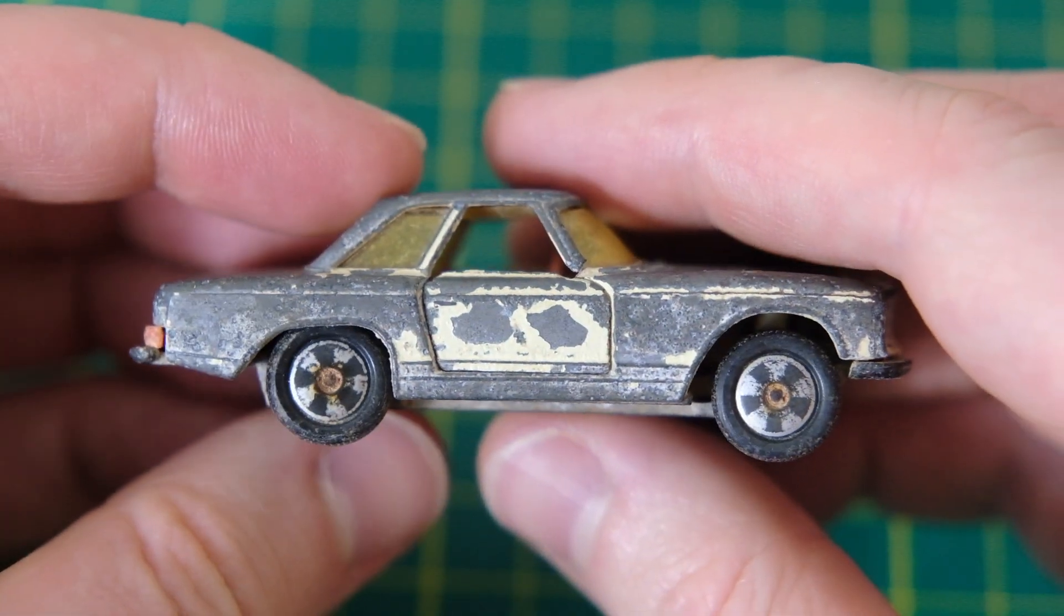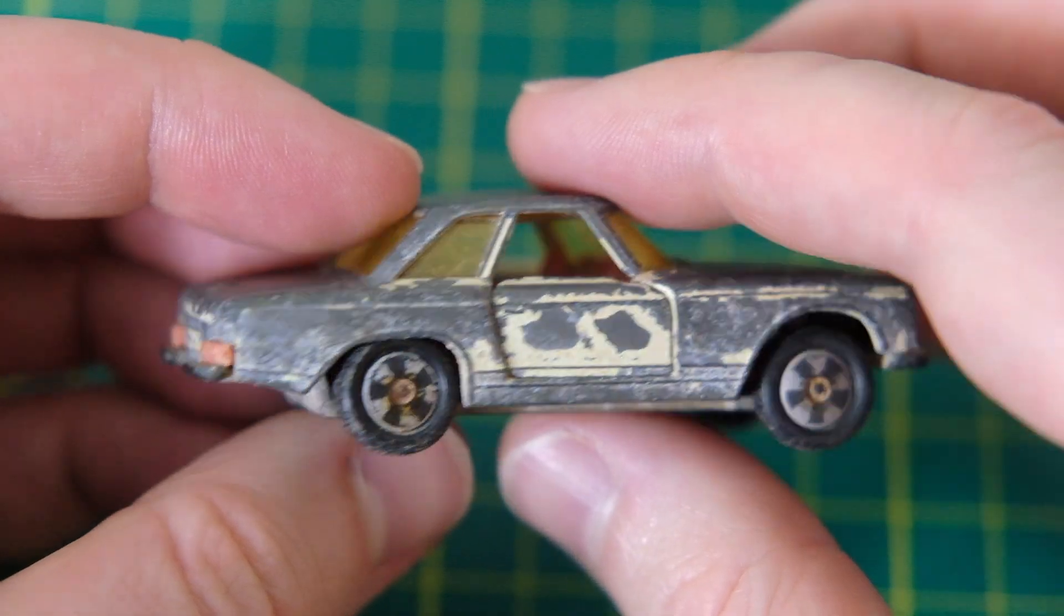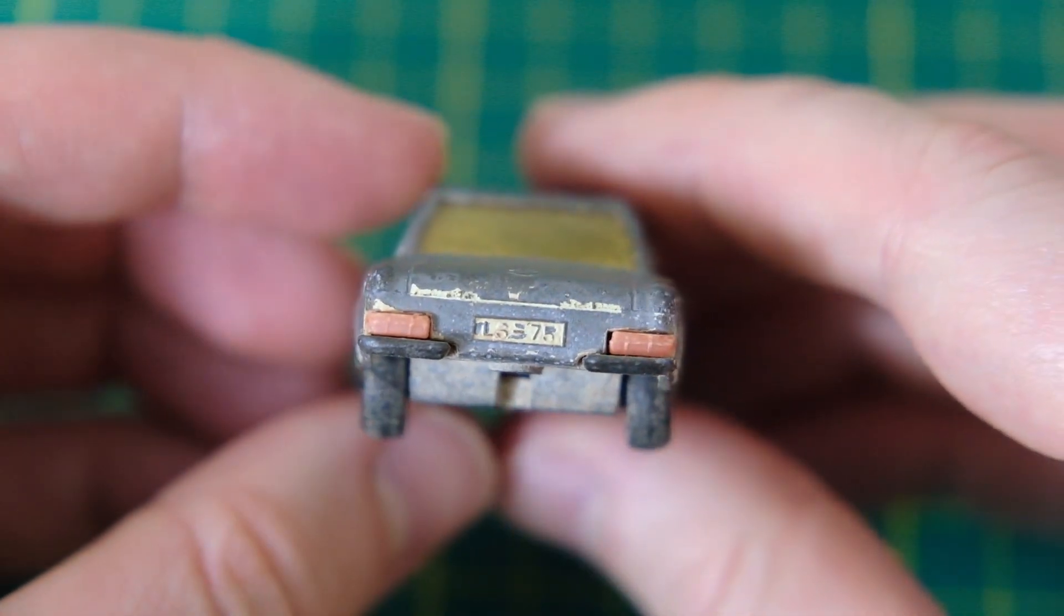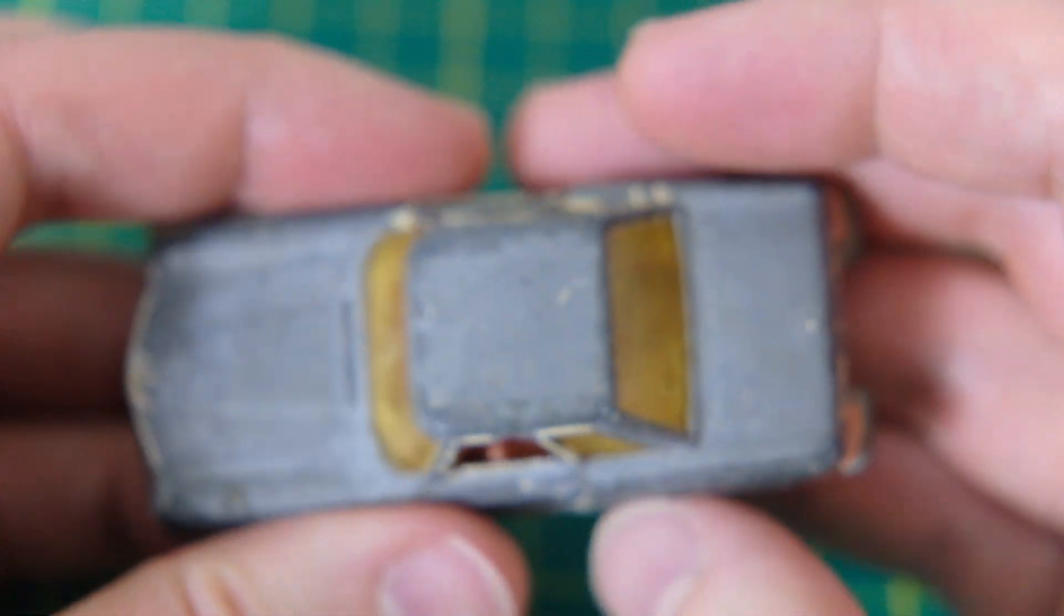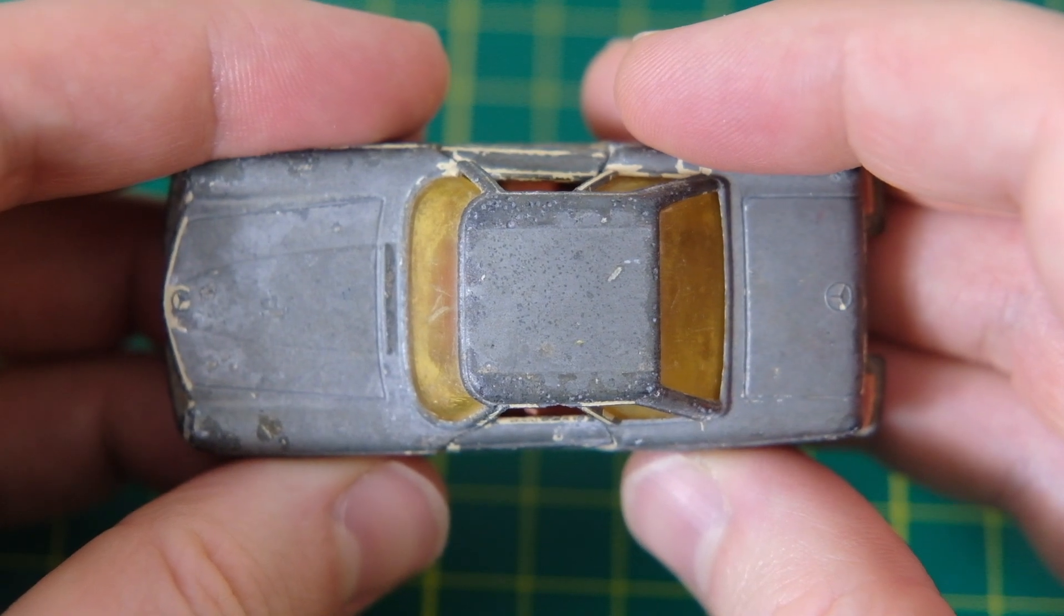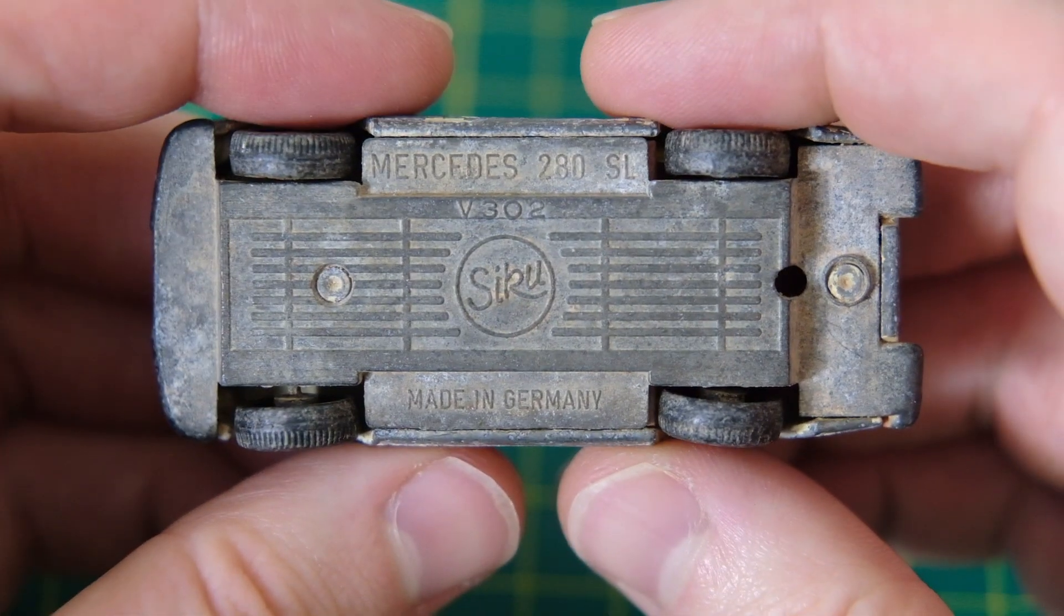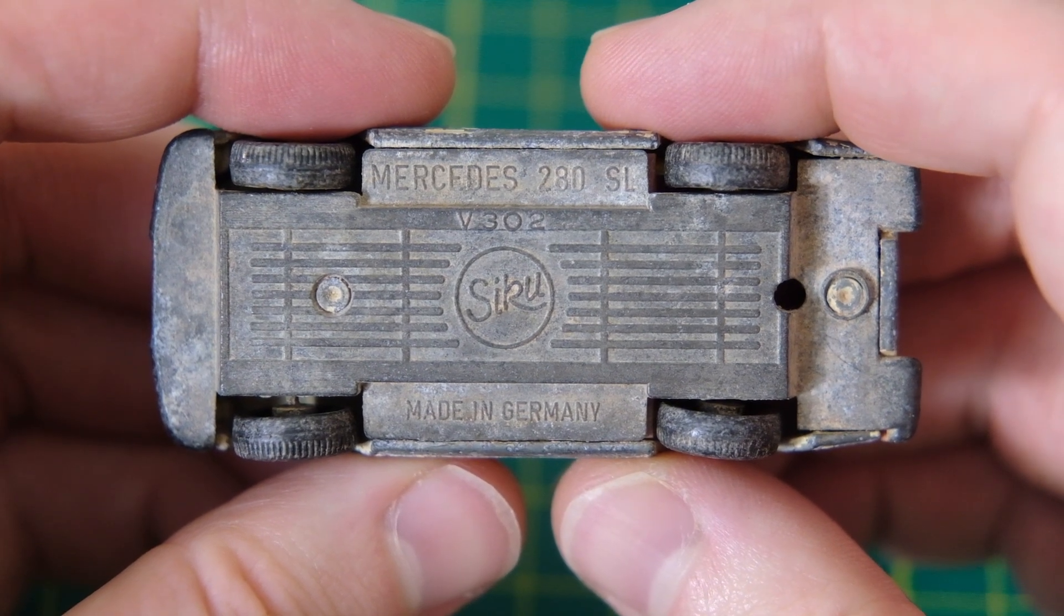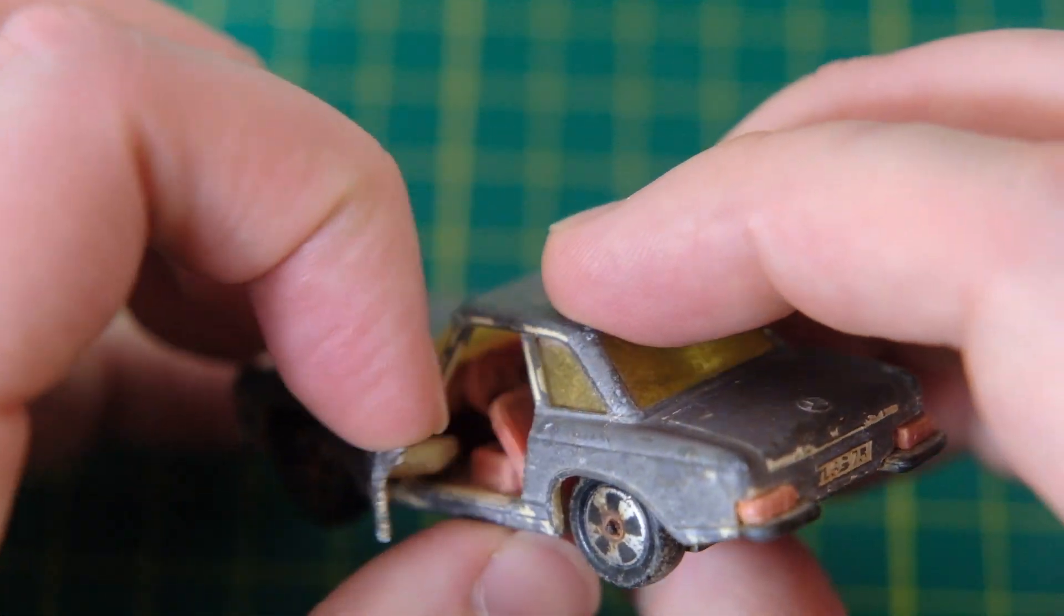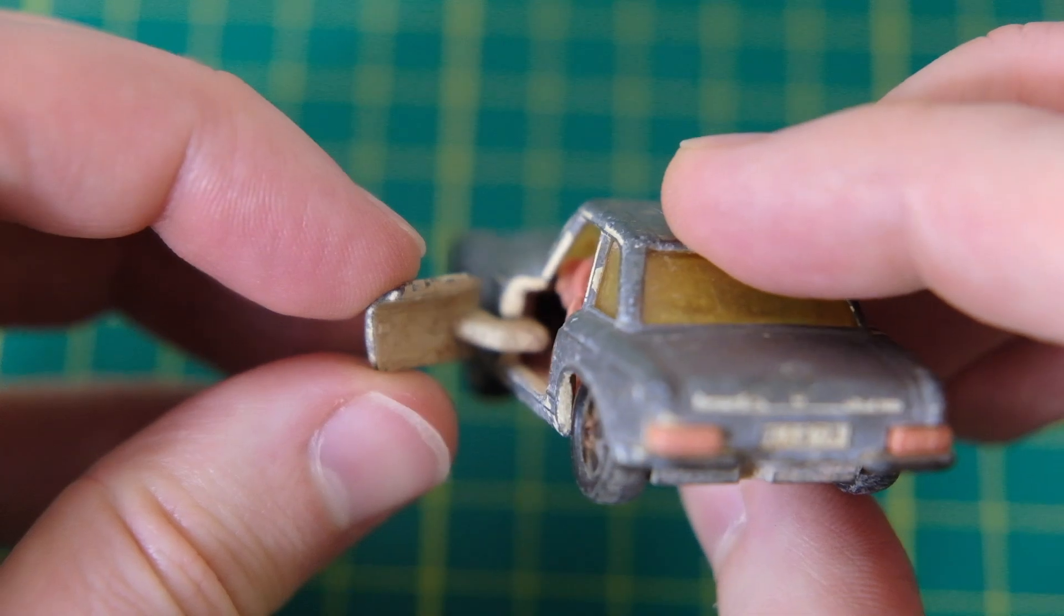Hello and welcome to another DieCastResto Siku restoration. I'm Jason and this is the V302 Mercedes 280 SL. These castings were produced from 1969 until 1974 in the cream color this would have originally been in, and in silver from 1975 until 1984.